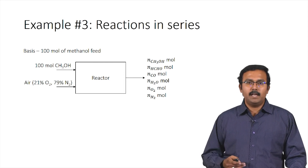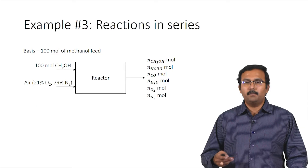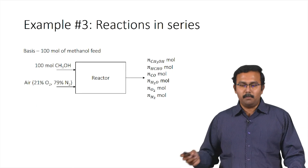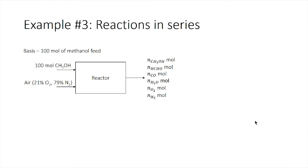Now that we have the flowchart to describe the process, let us try to solve this problem. Since we have used the basis in terms of moles, we cannot start with total balance equations because total moles of a system are not conserved during a reaction. So instead we will start with the component balances. The first component for which we can write a balance equation is methanol, CH₃OH.